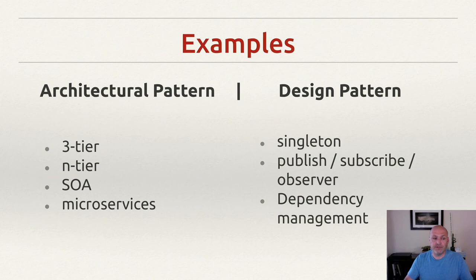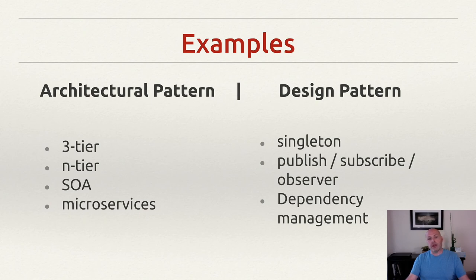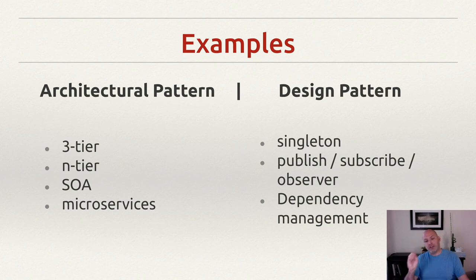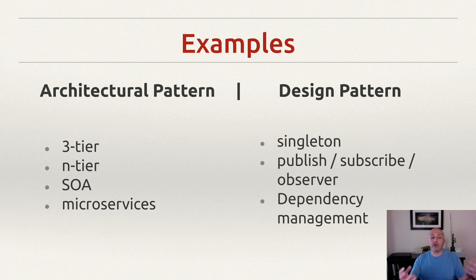Let's look at some examples of the differences between software architectural patterns and software design patterns. Examples of software architectural patterns are things like 3-tier, N-tier, service-oriented architecture, and microservices. Design patterns — which focus on the components themselves — are things like a singleton pattern, a publish-subscribe or observer pattern, and dependency management. These are choices we make to improve the design and development of an individual component. Architecturally, it's all about how the components interact.